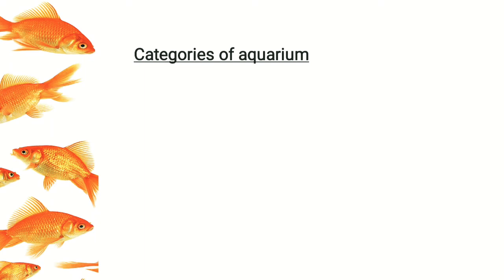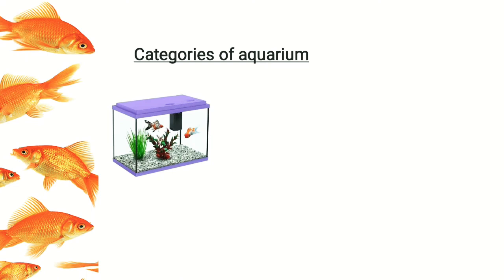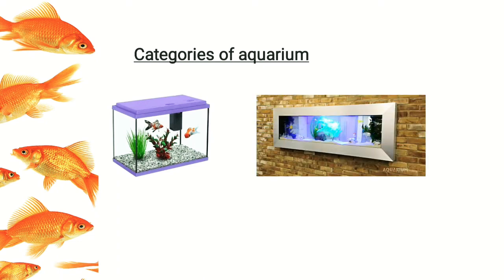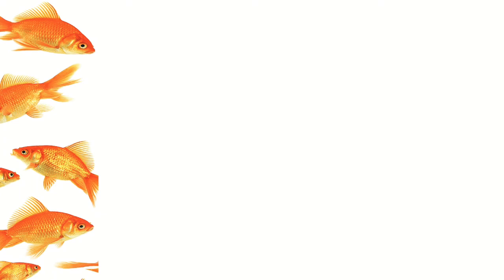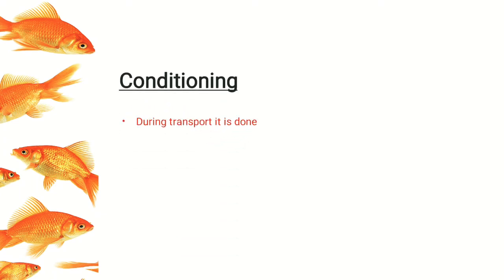Aquariums can be of two to three types. Based on construction, they can be frame aquariums or glass aquariums. Based on water type, they can be freshwater, brackish water, or marine. Based on temperature, they can be cold water or warm water aquariums.